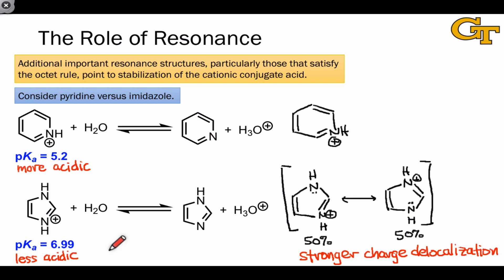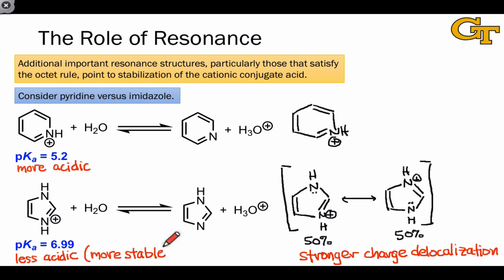Because the imidazoleum ion is more stable due to this resonance delocalization effect, the molecule is less acidic. And on the conjugate side, imidazole — the neutral conjugate base — is a stronger base than pyridine.